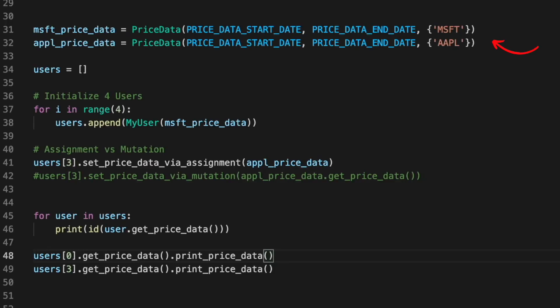Lastly, we're going to go through some code examples. To start our program, we're creating two price data objects, one with Microsoft stock data and another with Apple. We're then looping and creating four users, each initialized with Microsoft stock data.